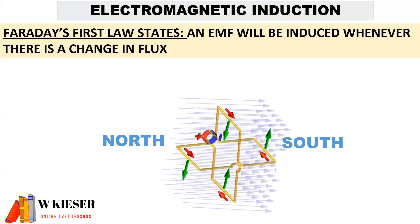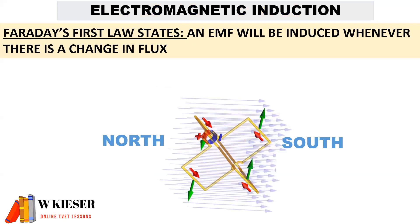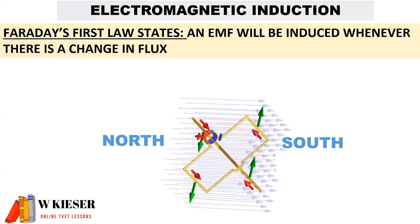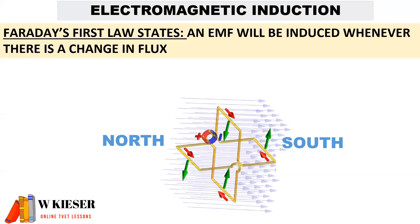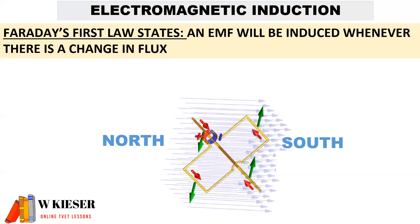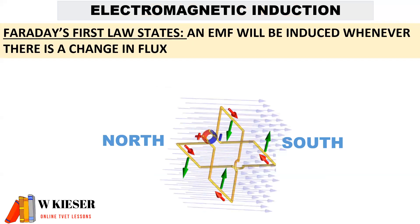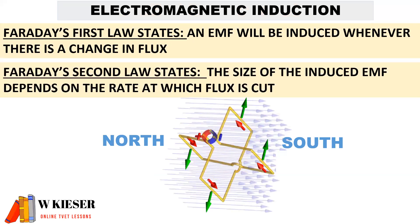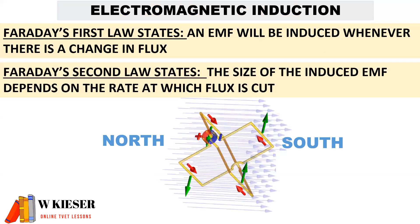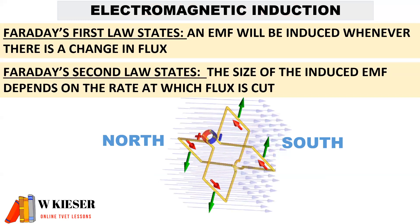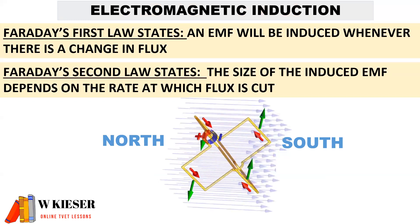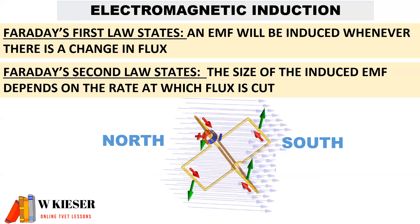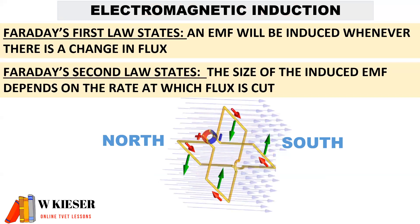Faraday's first law states that an EMF will be induced whenever there is a change in magnetic flux. According to Faraday's second law, it states that the size of the induced EMF depends on the rate at which the flux is cut.